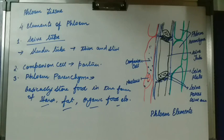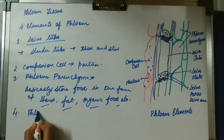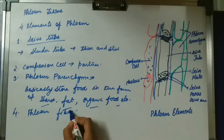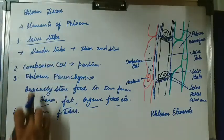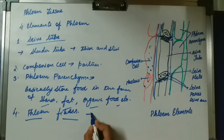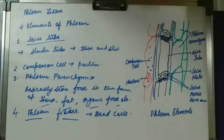The last element of phloem is phloem fibers. They are the dead cells. The three elements — sieve tube, companion cell, and phloem parenchyma — are all living tissues. Only the phloem fibers are dead cells, and their function is to provide mechanical strength to the plant body.